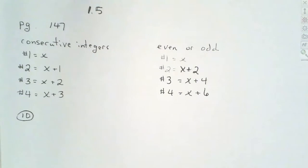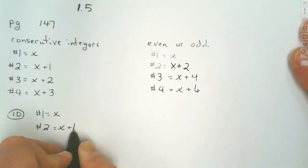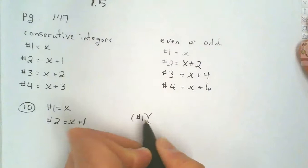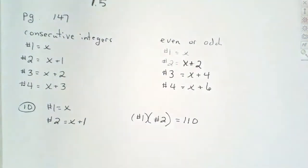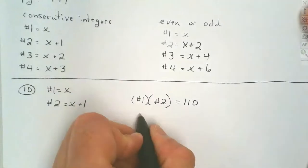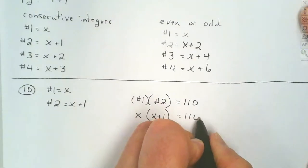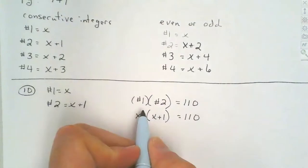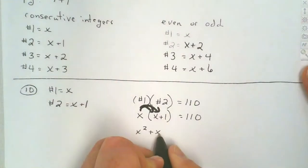We need two numbers, so we're going to call the first number x, and the second number is going to be x plus 1. We want the product, so the first number times the second number has to give us 110. Filling in the pieces, we've got x for the first number and x plus 1 for the second piece. We distribute x through, and that leaves us with x squared plus x equals 110.